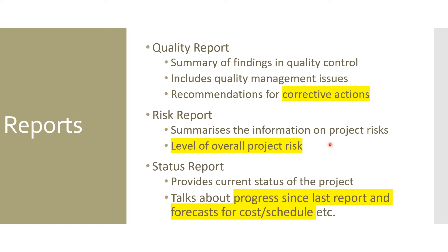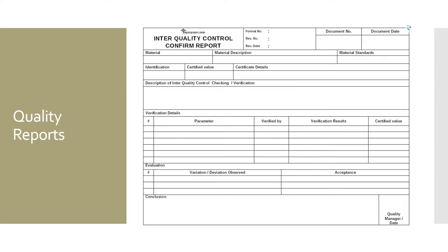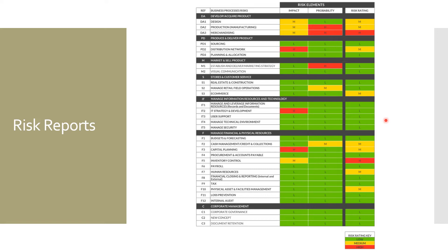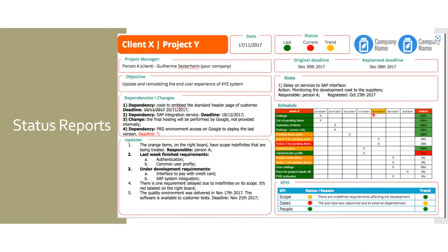The third report is the status report, a very common report in any project. It provides the current state of the project, talks about progress since the last report, and gives a forecast for cost and schedule. Here is a sample quality report showing quality information, verification details, and evaluation details. We also see an example of a risk report summarizing risks with risk rating, impact, and probability. And this is a sample status report for a client, showing schedule, dependencies, objectives, risk updates, and KPIs.